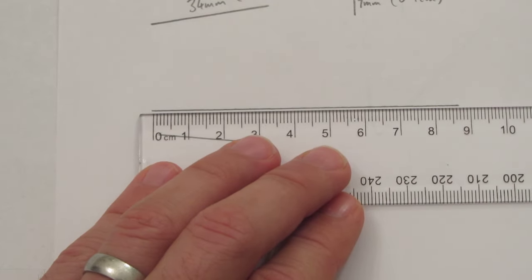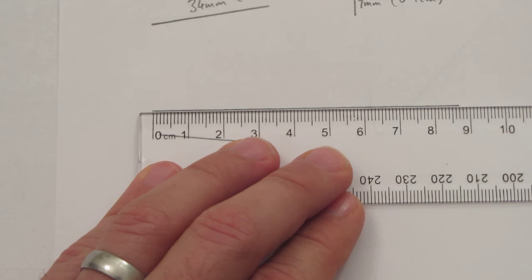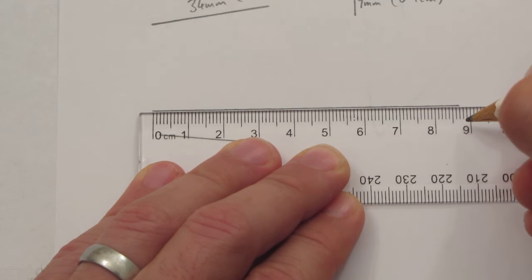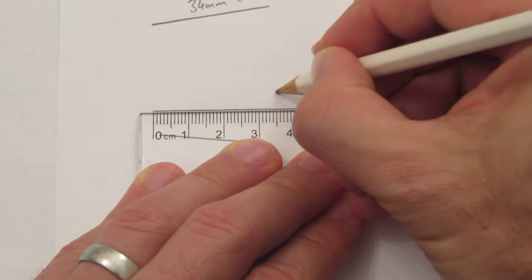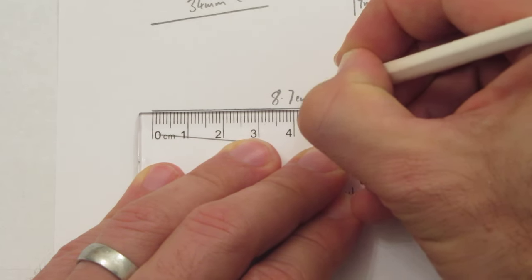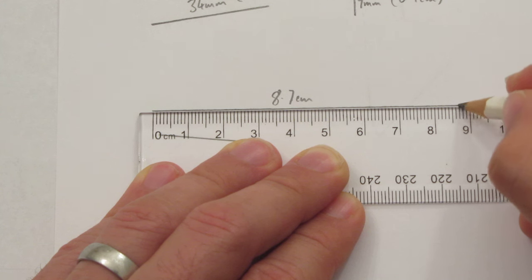So I find the centimeter part of my ruler and measure this all the way to 8 and then it goes past 8.5 up to 8.7 centimeters. The 0.7 comes from the fact that this is 7 millimeters long from here to here.